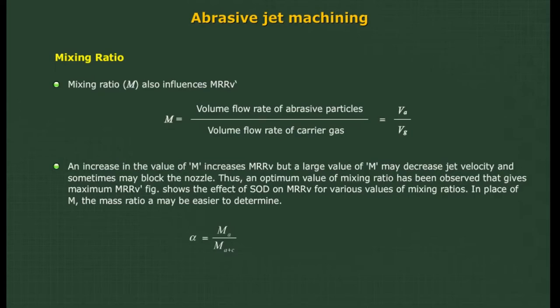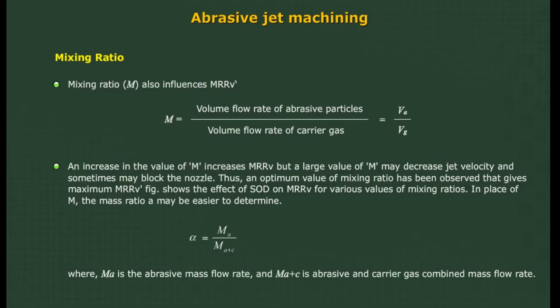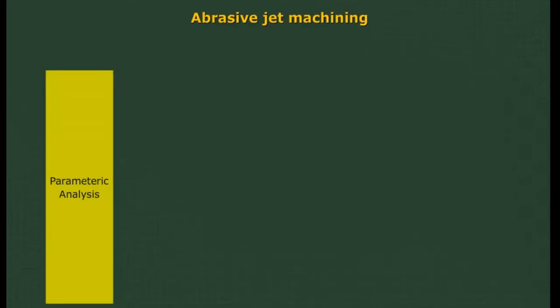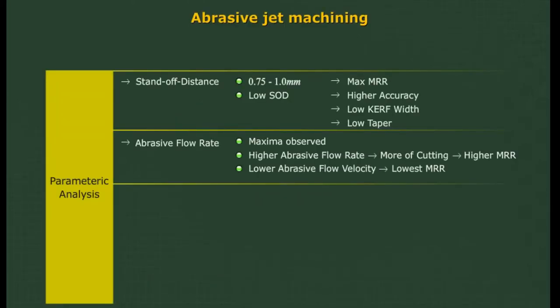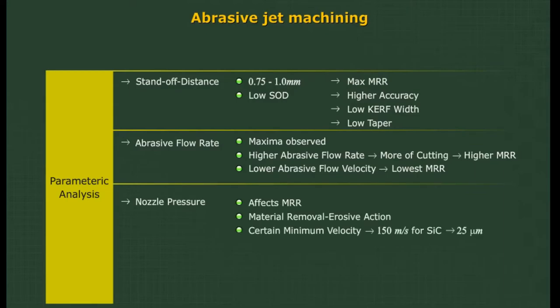In place of mixing ratio M, the mass ratio may be easier to determine, where MA is the abrasive mass flow rate and MA+C is the abrasive and carrier gas combined mass flow rate. The process parameters can thus be summarized.